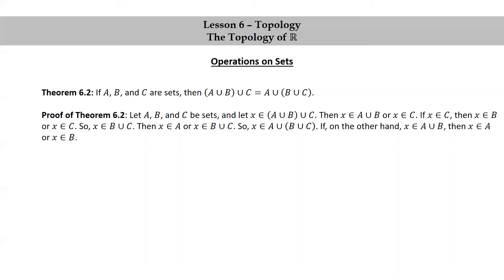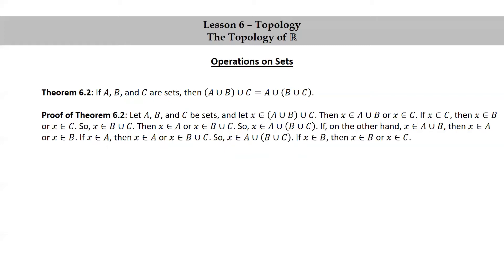Now we have to look at what happens if X is in A union B. If X is in A union B, then X is in A or X is in B. If X happens to be in A, then we could use the previous remark again to say that X is in A or X is in B union C. And by the definition of union, that means that X is in A union (B union C). Finally, if X is in B, then by the previous remark, X is in B or X is in C, so X is in B union C. And again, by the previous remark, X is in A or X is in B union C, so X is in A union (B union C).